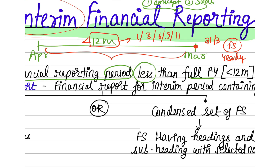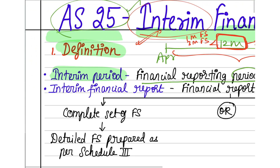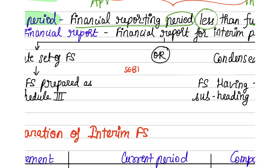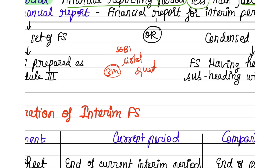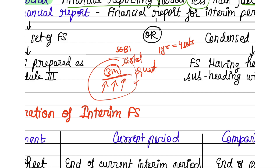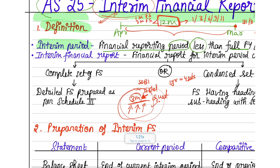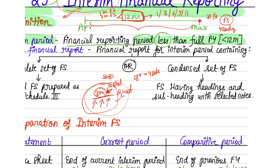If you prepare a financial statement set for less than 12 months — for example a 1-month or 3-month set — that is known as interim financial reporting. We prepare these because, for example, SEBI guidelines require listed companies to prepare a quarterly financial statement set, meaning every 3 months they must prepare a set — 4 sets per year. This allows users and authorities to understand the company's activity every 3 months, so that if any mishap is happening, it can be detected sooner.